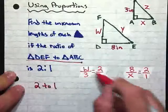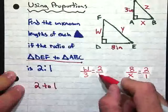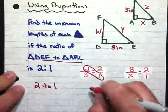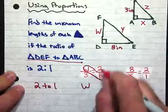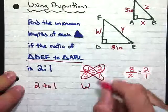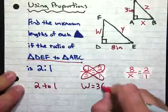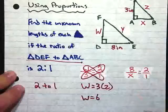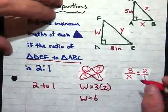So then in order to do this, to solve this, we would want to use the cross product properties. So we cross multiply, W times 1, we get W, and then we set it equal to our other cross product, 3 times 2. So W equals 6.